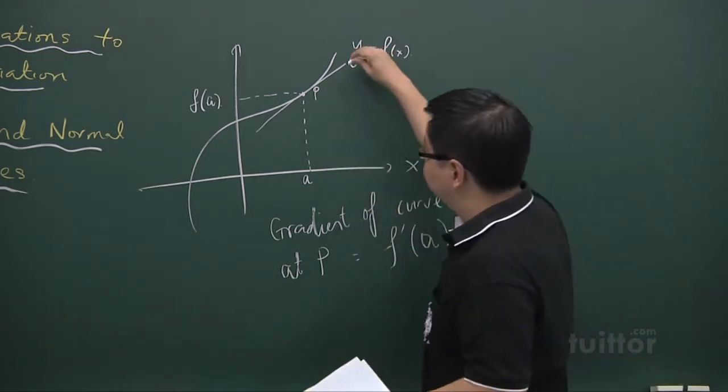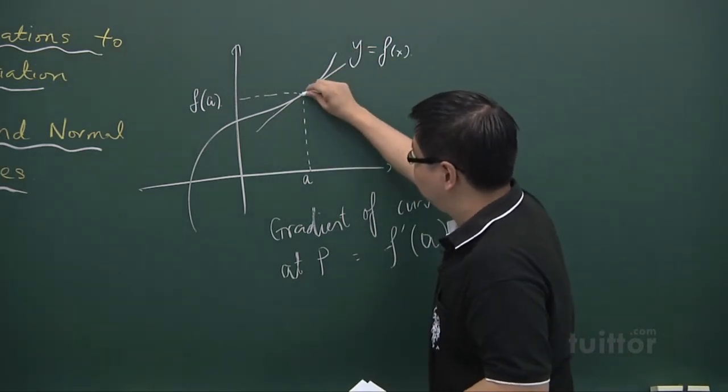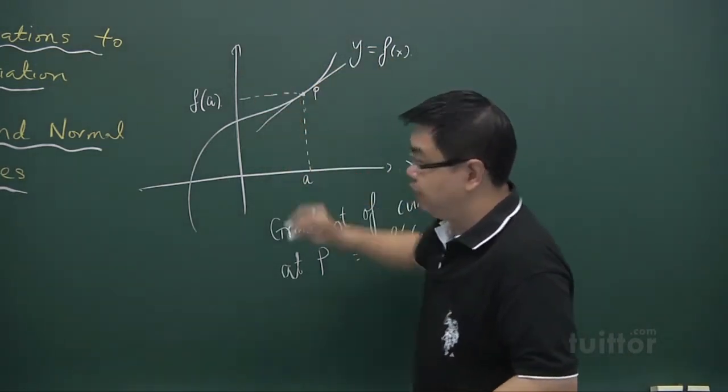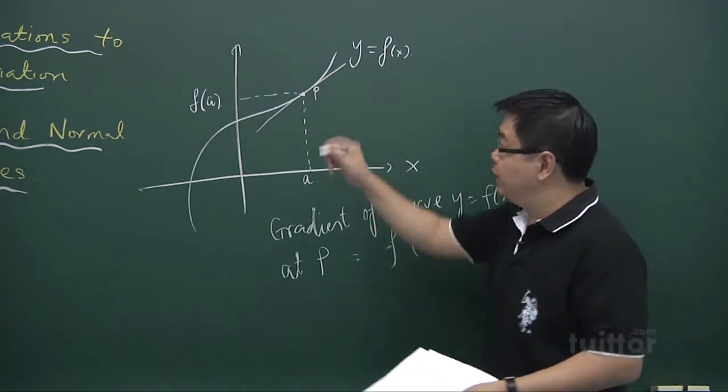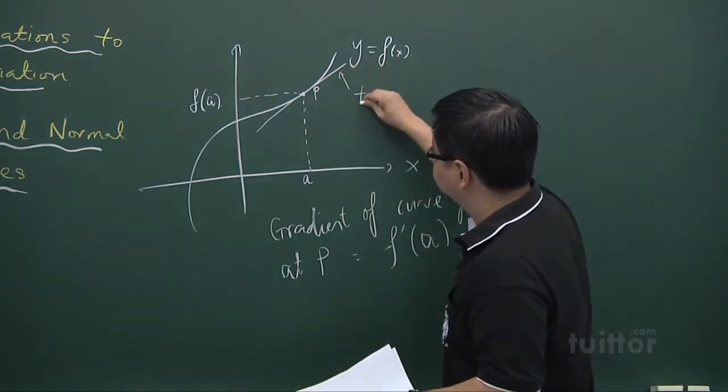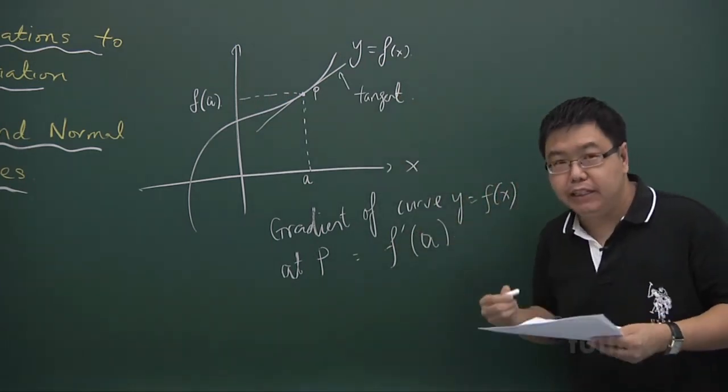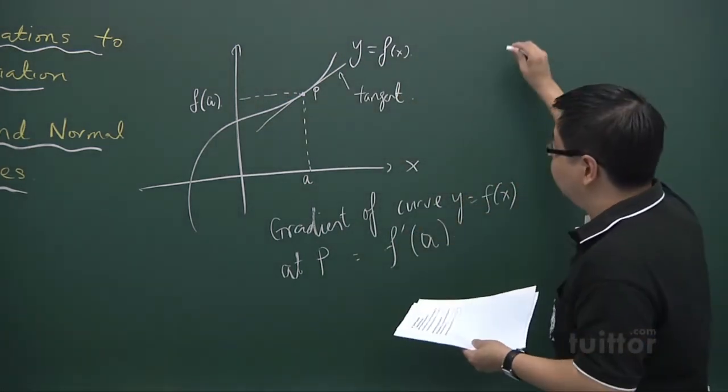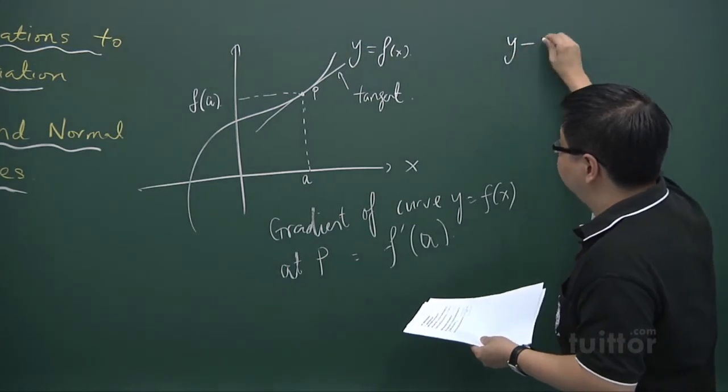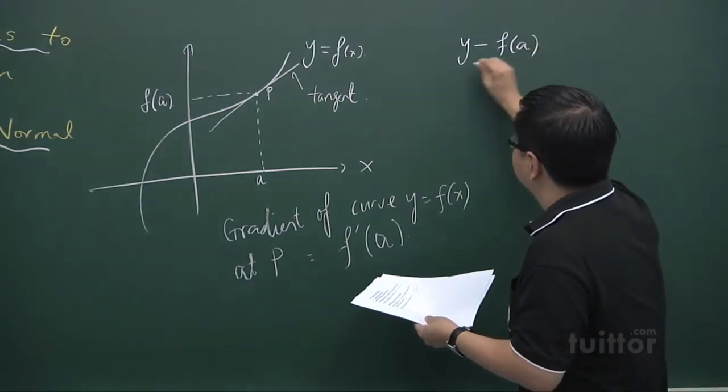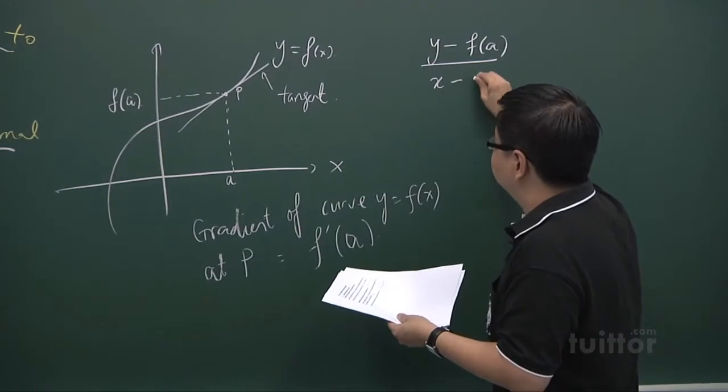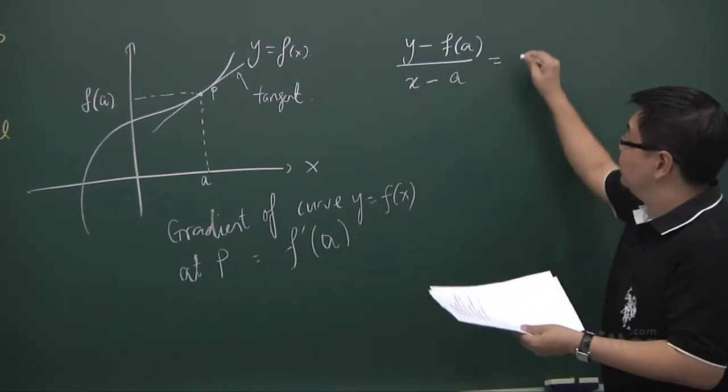Then at the same time, this line is passing through the point (a, f(a)). So you can find the equation of this tangent line. How do we go about finding the equation of this tangent line? We can say y minus f(a) over x minus a equals f prime of a.